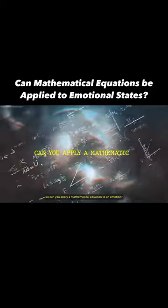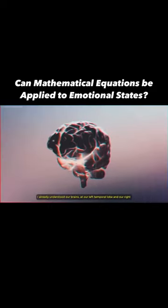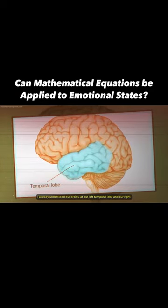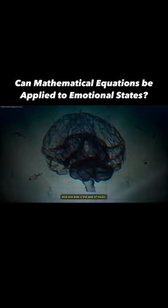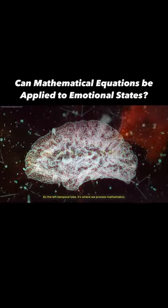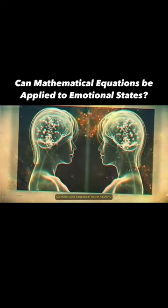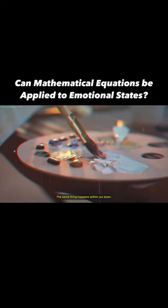Can you apply a mathematical equation to an emotion? I already understood that our brains—our left temporal lobe and right temporal lobe on both sides of our head—one side is the seat of music, the other side, the left temporal lobe, is where we process mathematics. There's this concept of mirror neurons and how people can mirror mimic. The same thing happens within our brain.